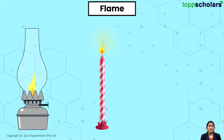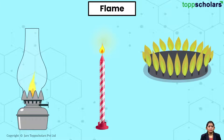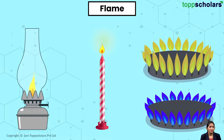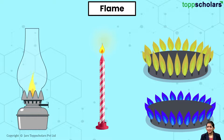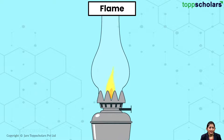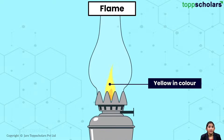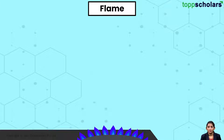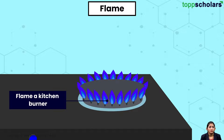Have you ever seen a flame? If you have, you will notice the various colours in it, the unique shape it takes, its mesmerising movement. Let us take a closer look at flame. When you carefully look at the flame of a kerosene lamp, it is yellow in colour. What about the kitchen burner?